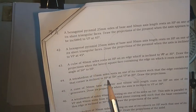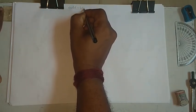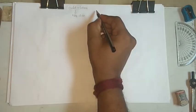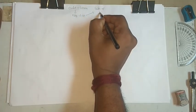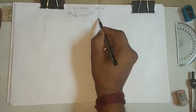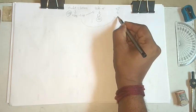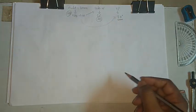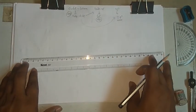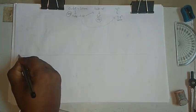Draw the projection when the lateral square face containing the edge on which it rests makes an angle of 50 degrees to the HP. So here we have a cube of size 40mm, resting on one of its edges. A lateral surface containing this edge makes an angle of 50 degrees to the HP, and the resting edge is inclined to the VP at 30 degrees.